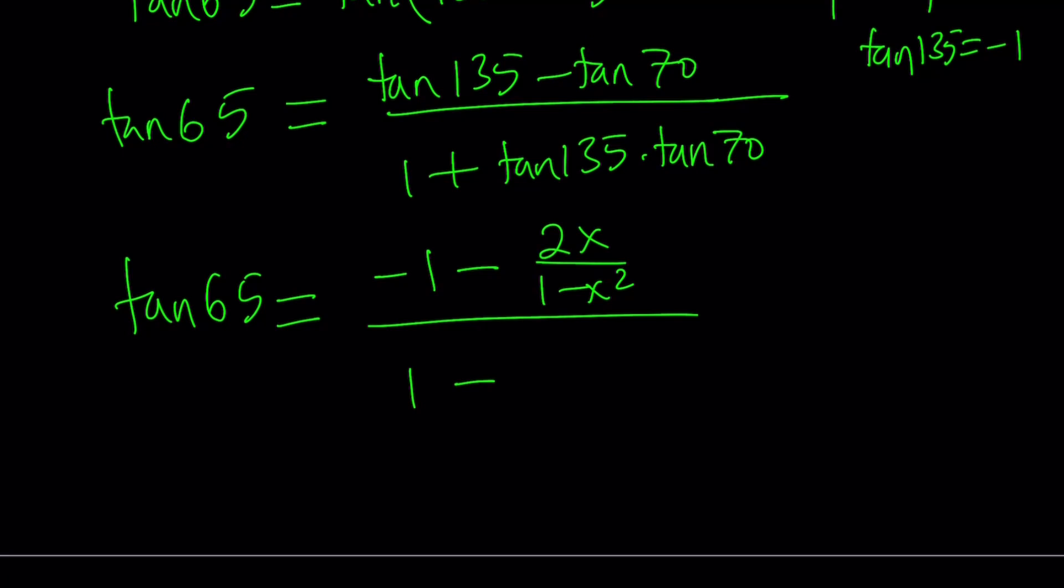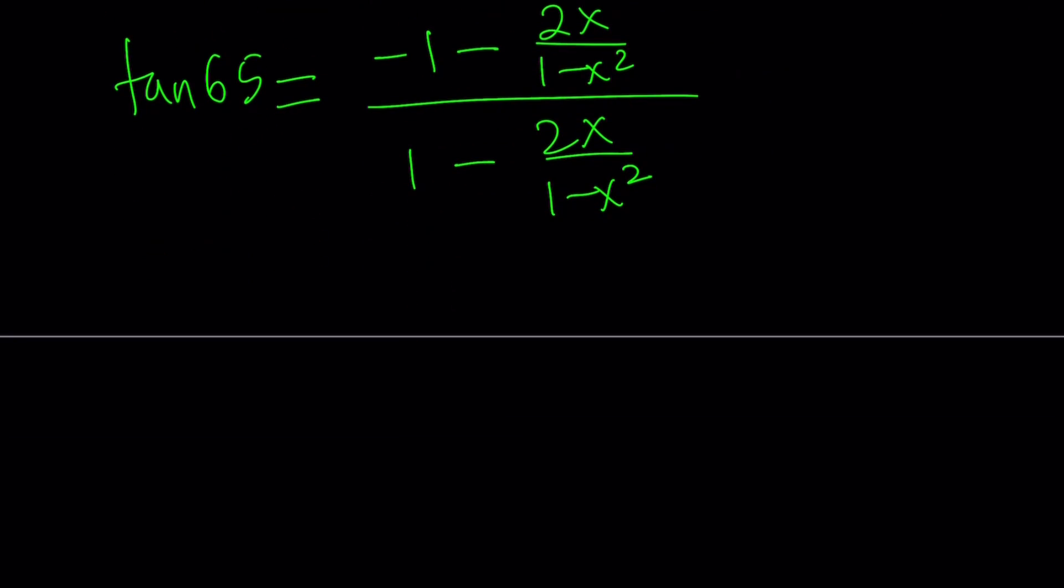So, I'm just going to write it as a minus sign, and tangent 70 is 2x over 1 minus x squared. Awesome. This is another value for tangent 65, which is different from what we found first. Let's go ahead and simplify this a little bit.